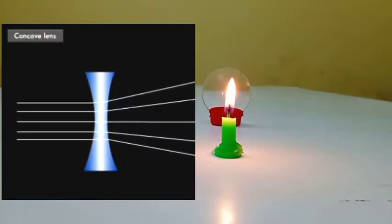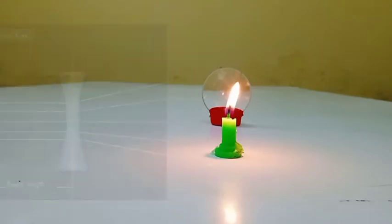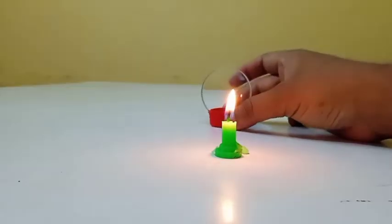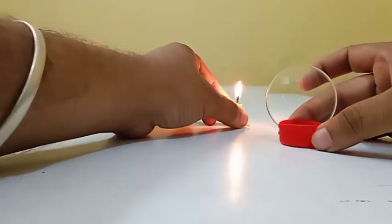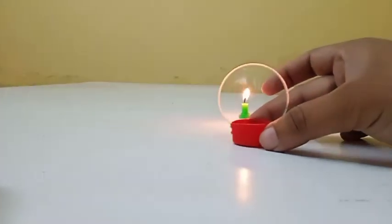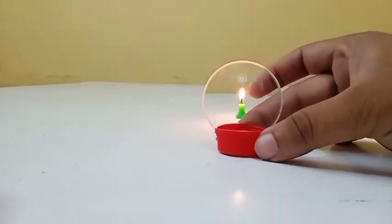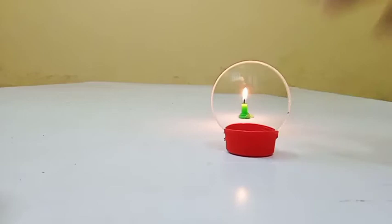Because this concave lens is a diverging lens and it will make the image on the same side. So we have to shift the lens like this. We have to see the candle through this lens.